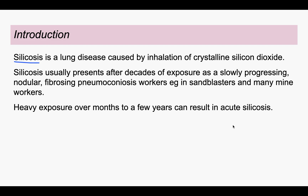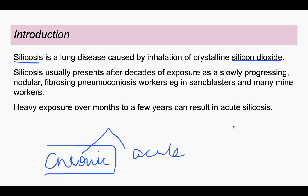Silicosis is a lung disease which is caused by inhalation of silicon dioxide. Silicosis can be chronic or it can be acute. The chronic form is the most common form — after decades of exposure in any occupation such as sandblasting or mine workers, it presents as a fibrosing pneumoconiosis.